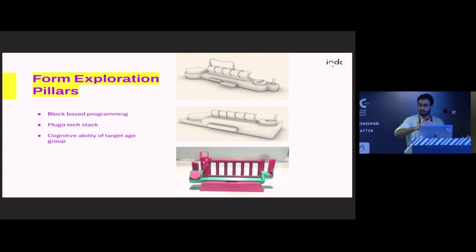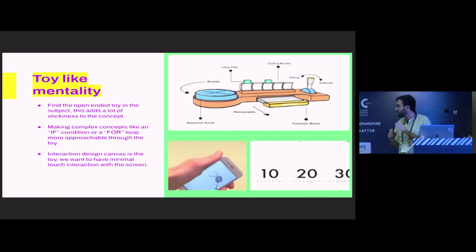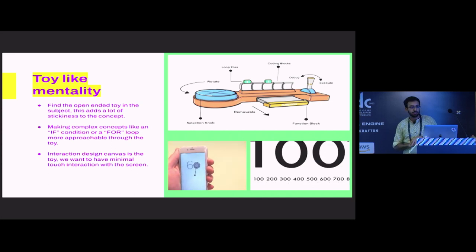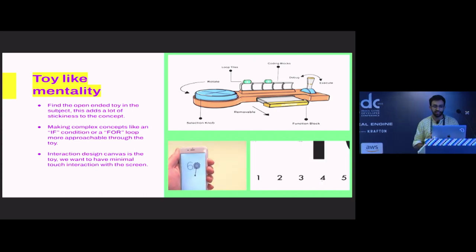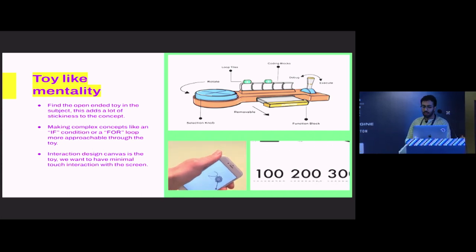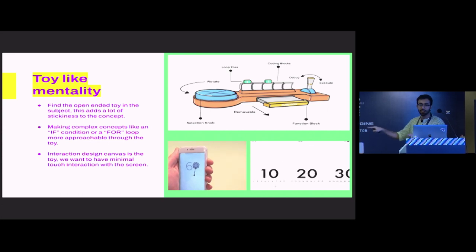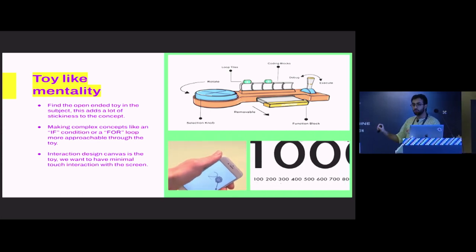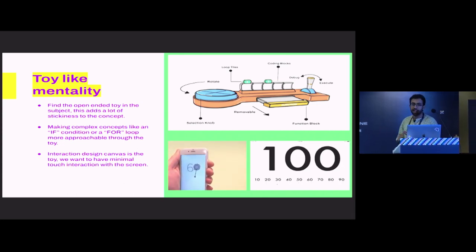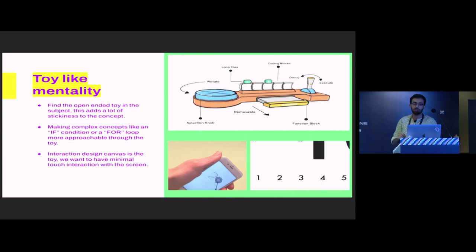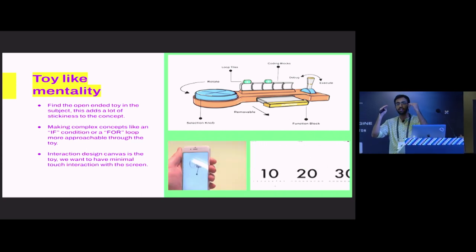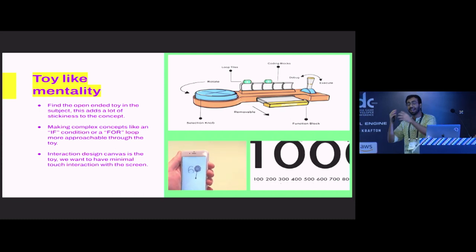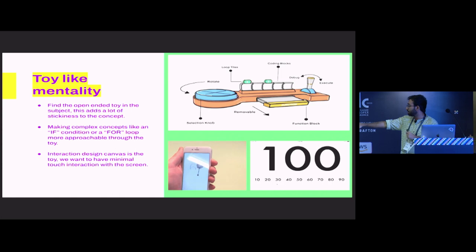Like you can see, block-based programming is already featuring in our form explorations. Once we have a very simple form, what we try to do is have a toy-like mentality. We take a step back where we find the open-ended toy in a subject. If you look at the bottom right gif, it's basically a number line. But this interaction has been turned into a toy where if you zoom in or zoom out, it shows you infinite numbers.